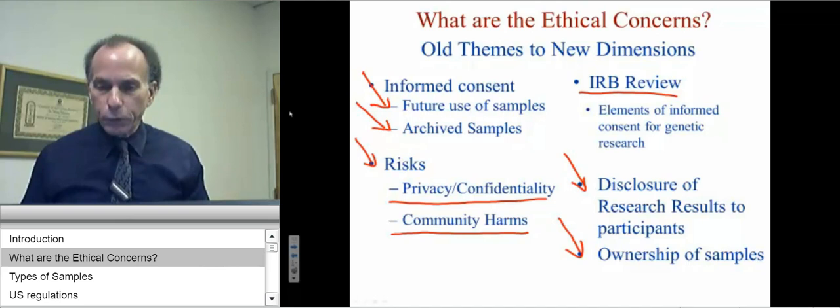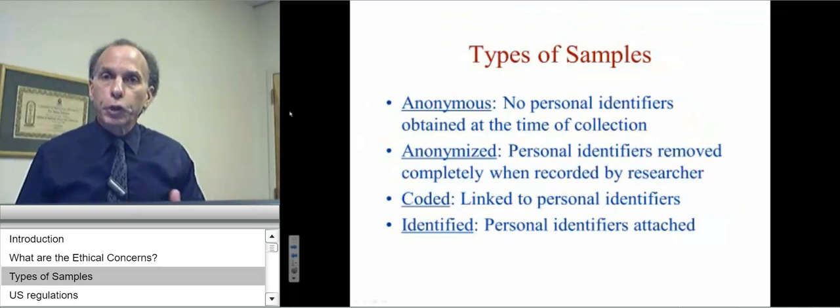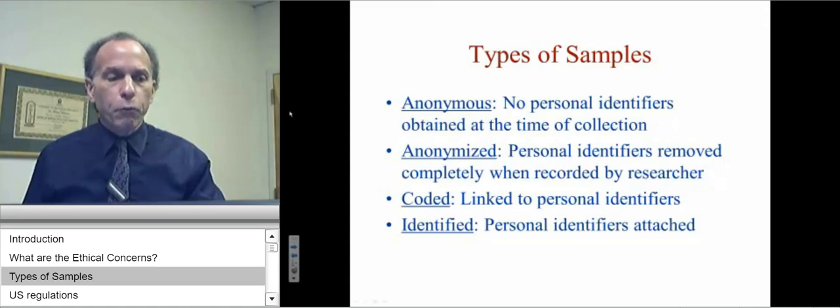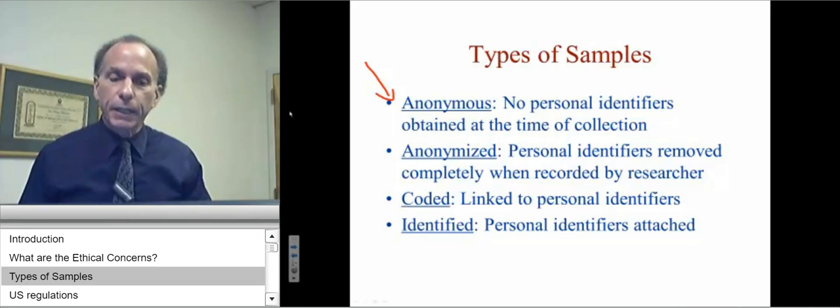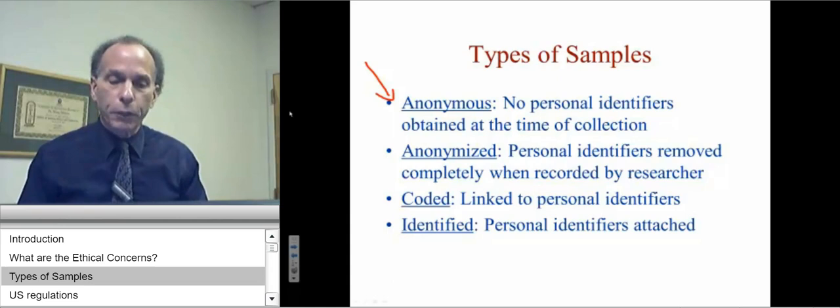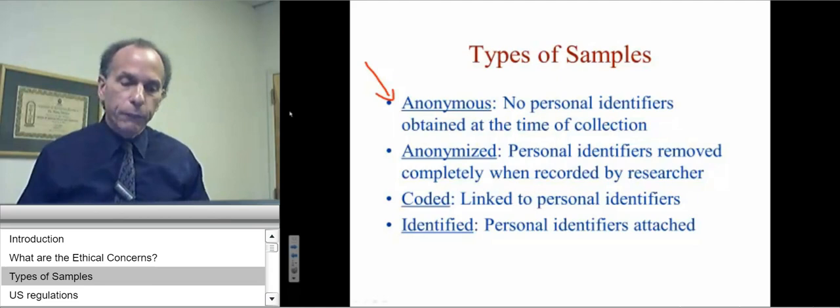This slide shows the terms we use for the type of samples collected. First, samples are considered anonymous if no personal identifiers were obtained at the time of collection. We call samples anonymized if personal identifiers are completely removed when recorded by the researcher. We call samples coded if there are still links to personal identifiers. And samples are identified if the personal identifiers remain.